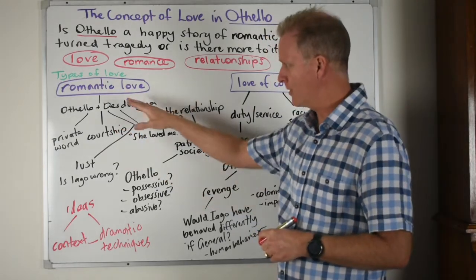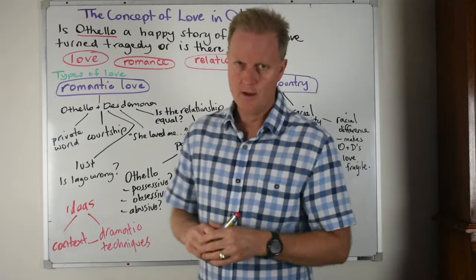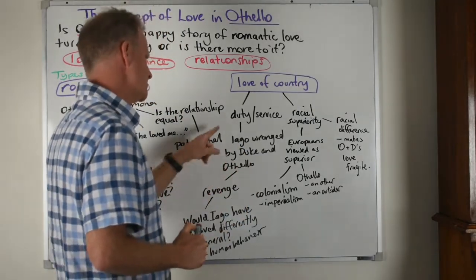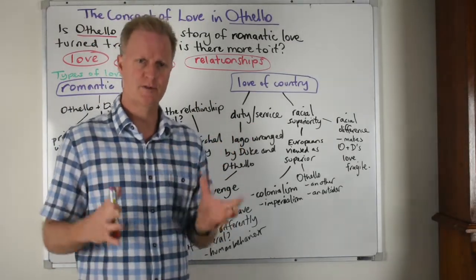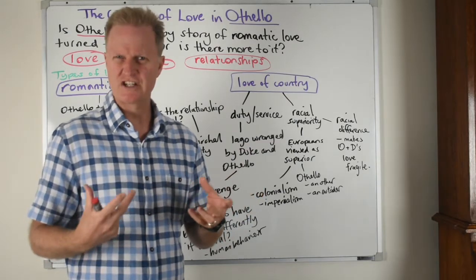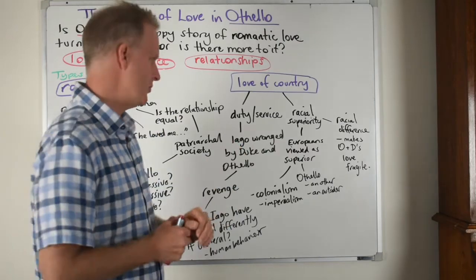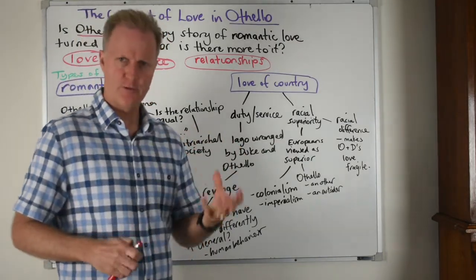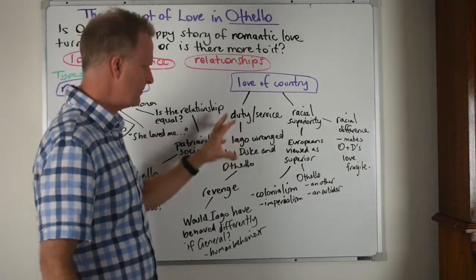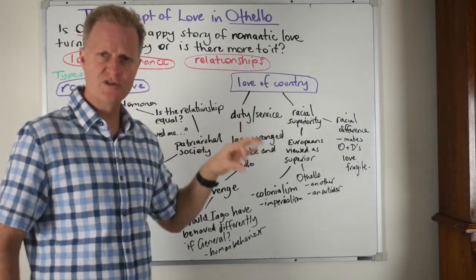You could look at other characters as well for romantic love. Then there's this idea of love of the country — patriotic pride and the notion of duty and service. When we look at Iago, the Duke had picked Othello as general, whereas Iago had given excellent service to the Venetian state and worked his way up the ranks. He feels hard done by. And Othello does the same thing by promoting Cassio above him.